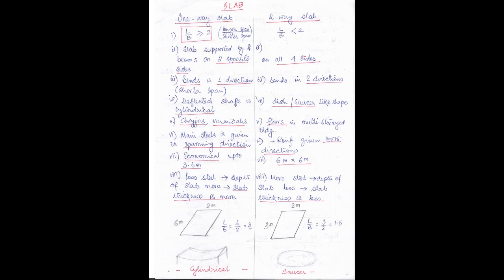Here is a diagram illustrating the examples. For a one-way slab, take a 2-meter by 6-meter span. The longer span by shorter span gives L by B = 6 by 2 = 3, which is more than 2, so this is a one-way slab. For a two-way slab example, take 3 meters by 2 meters. The ratio is 3 by 2 = 1.5, which is less than 2, so this is a two-way slab. The diagram also shows that a one-way slab bends in a cylindrical way, and a two-way slab bends like a dish or saucer.